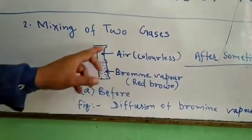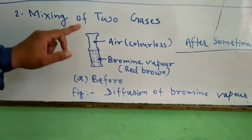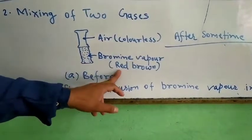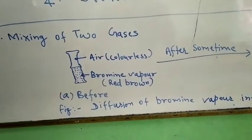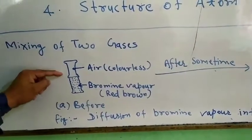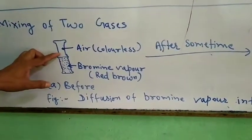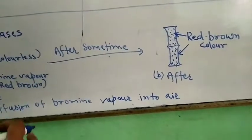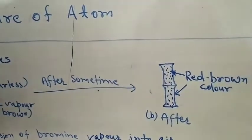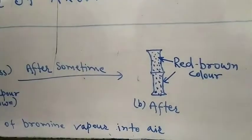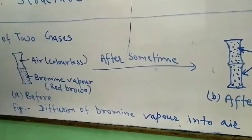The next example is mixing of two gases. We take two containers: one filled with air, and another filled with bromine vapour, which is red-brown in color. Air is a colorless substance. We can see that the red-brown color of bromine vapor mixes up with the colorless air molecules, and they impart a red-brown color, showing the diffusion of bromine vapor into air.